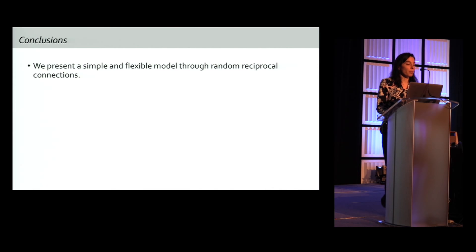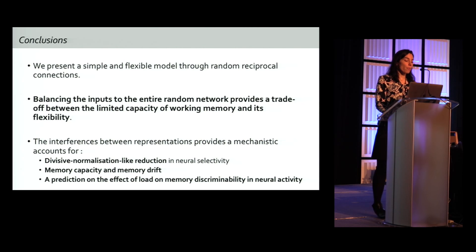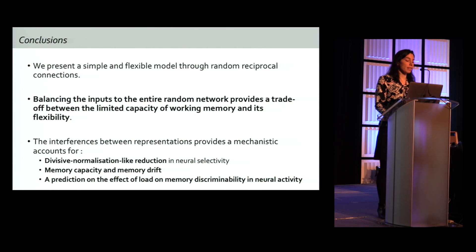So a detailed analysis of what's happening here is still ongoing work. So we presented a simple and flexible model through random reciprocal connection, and balancing the input to the entire random network provides, in this setting, a tradeoff between the limited capacity of working memory and its flexibility, and the interferences between representation provides a mechanistic account for divisive normalization like reduction in neural selectivity during working memory, memory capacity and memory drift, and a prediction on the effect of load on memory discriminability in neural activity. Thank you. I would like to thank mainly the Bushman Lab in Princeton Neuroscience Institute, and the Brian team. So this is the spiking neural network simulator that I use for this project. Thank you.